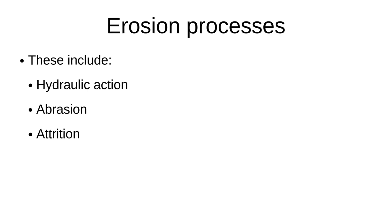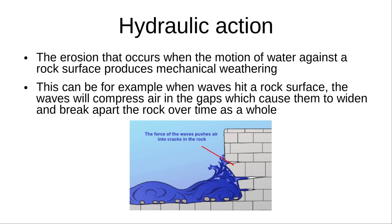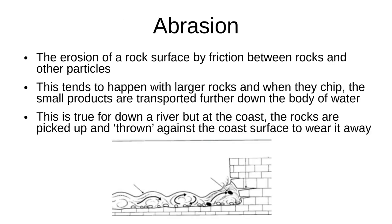There are also three erosion processes which you need to know. Hydraulic action: the erosion that occurs when the motion of water against a rock surface produces mechanical weathering. For example, when waves hit a rock surface, the waves compress air in the gaps, which causes them to widen and break apart the rock over time. Abrasion: the erosion of a rock surface by friction between rocks and other particles. This tends to happen with large rocks, and when the rocks chip, the smaller products are transported further down the body of water.